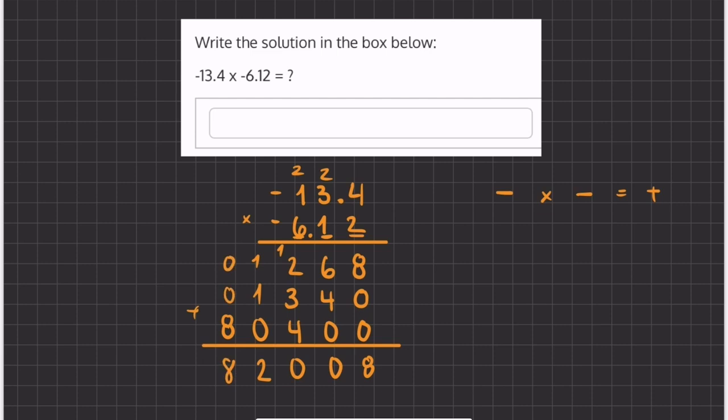And so now we're going to count up the places that we have after the decimal in both of the numbers that we multiplied. So we have 1, 2, 3 numbers after the decimal. So that means we're going to move our decimal place 1, 2, 3 times over.